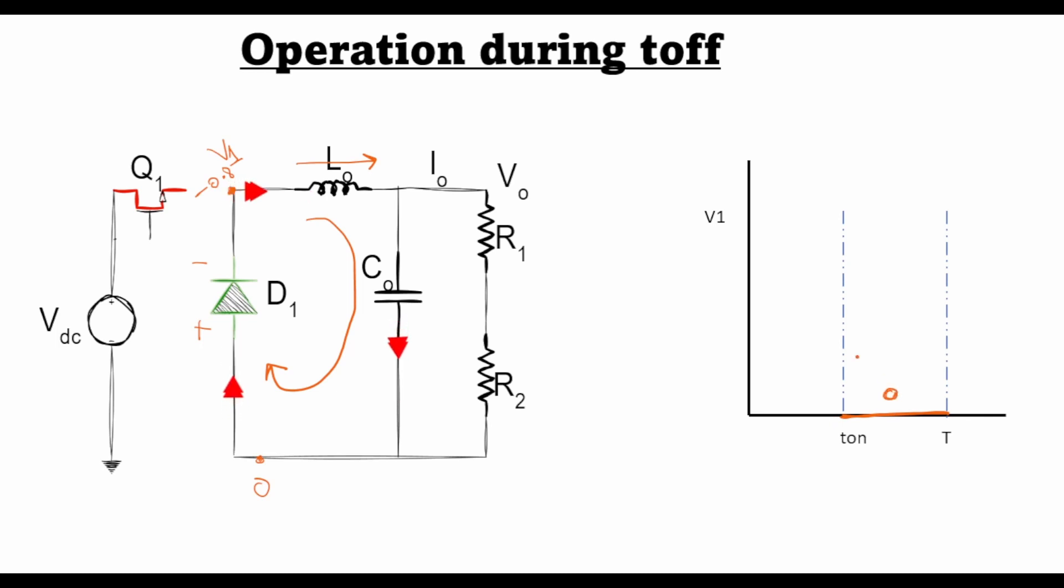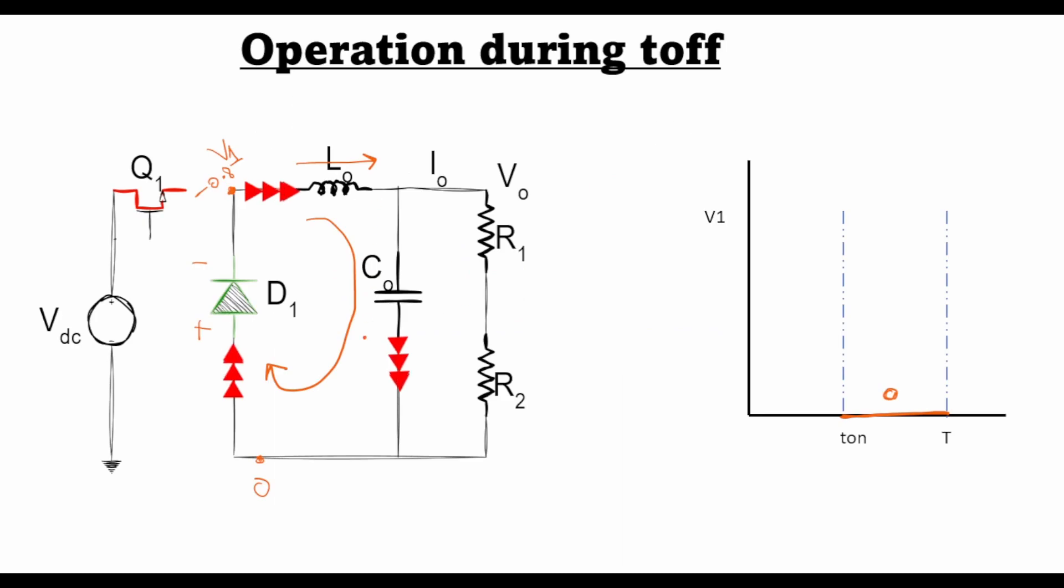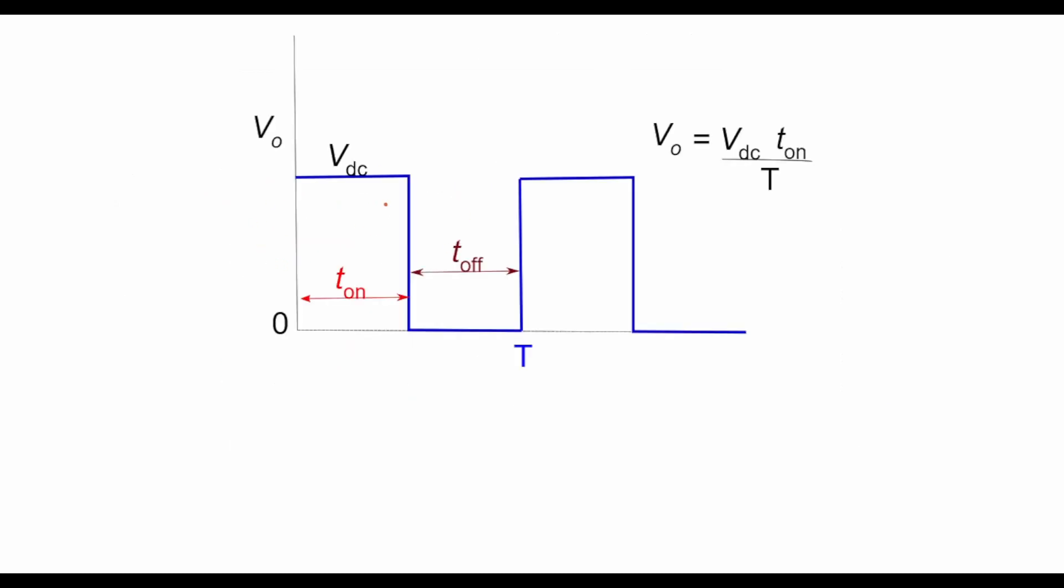So if I take these two modes of operation together, T_on and T_off, we get a waveform like this. The output voltage V0 is basically the average of this signal. During time T_on the voltage V1 is Vdc, during time T_off the output voltage is 0. Point V1 is followed by an LC filter. What I get here at the output, which is V0, is the average value of the signal here.